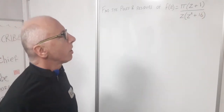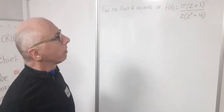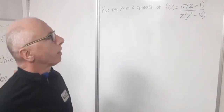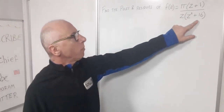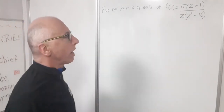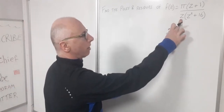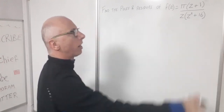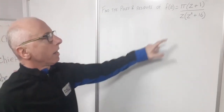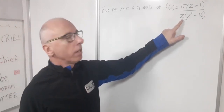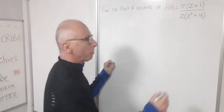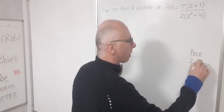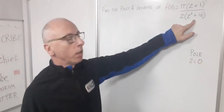There's no zero in the numerator since there's no tangent, cosine, or sine, but we can get a zero in the denominator. Factoring out z²+16 and z, we see that when z equals zero, the function becomes non-analytic. Therefore z=0 is our first pole.